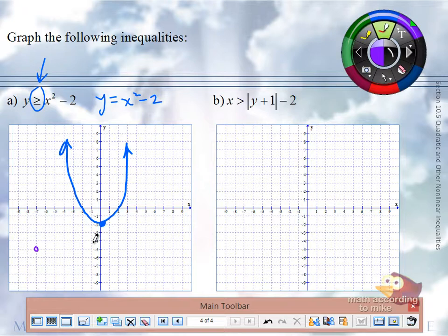The test point is going to help us determine if we shade inside or outside the bowl. So, if I put in negative 7, negative 5 into my original inequality, notice that means negative 5 goes in for y. Negative 7 goes in for x. Is that true or false? False. Negative 5 is not greater than or equal to, what would that be? 49? Minus 2, so 47.